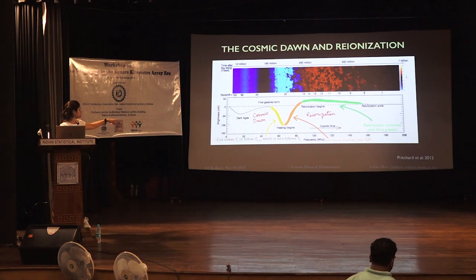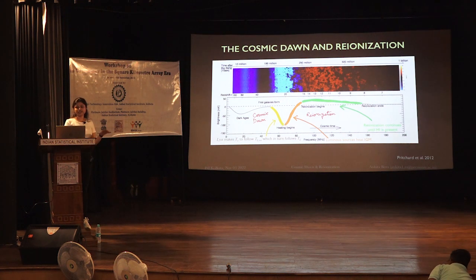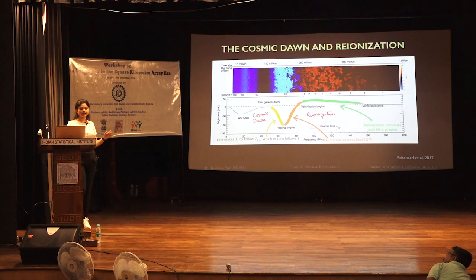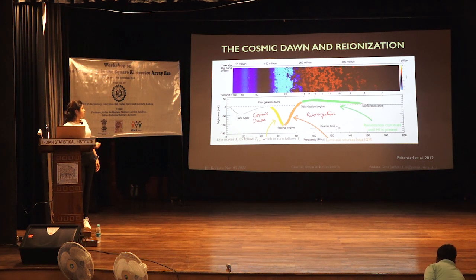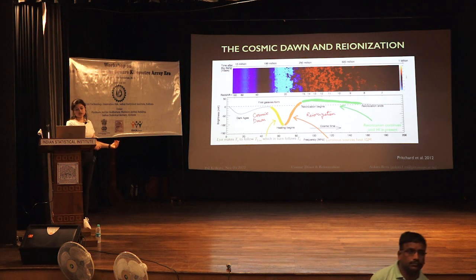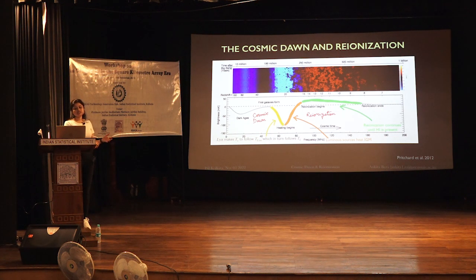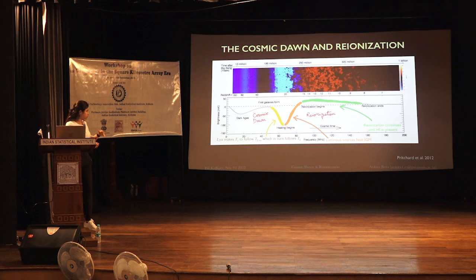This period is mostly governed by different heating mechanisms present in the intergalactic medium. It is often assumed that X-rays from different sources actually heat the intergalactic medium, giving rise to this heating profile. But in our study, we have considered another heating mechanism: cosmic ray protons coming from these first stars, and we try to see the impact of these cosmic ray protons in the intergalactic medium and in turn the gradient of the signals.